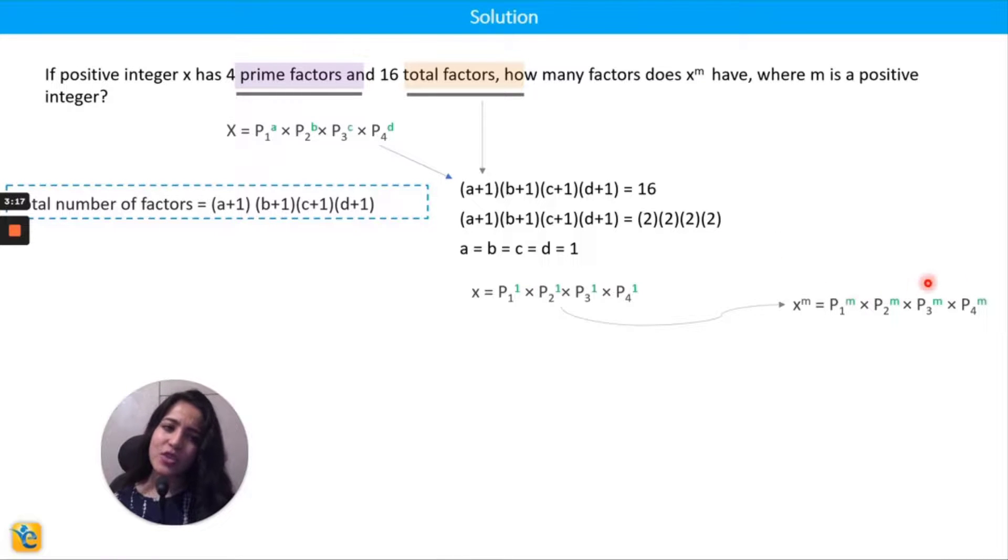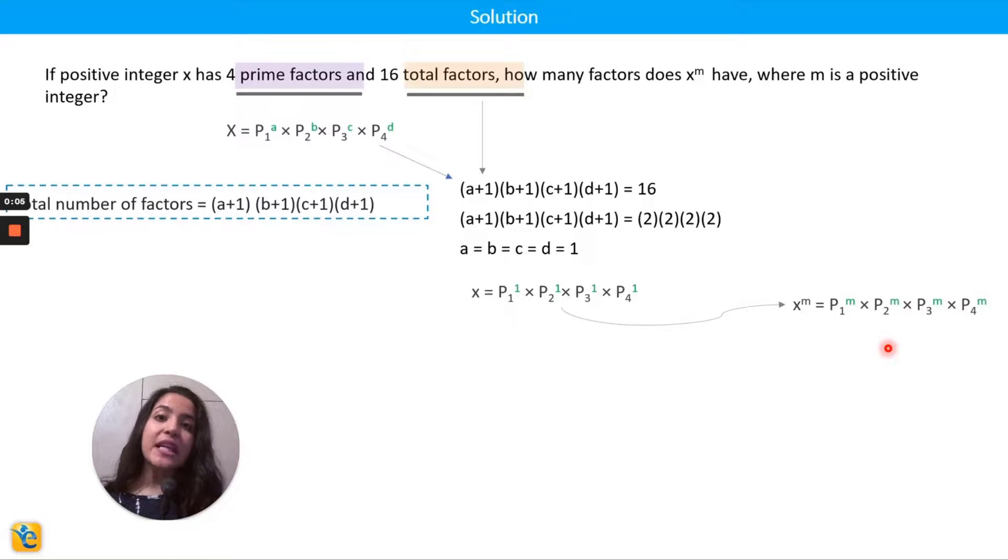Yet again my question was to find the total factors, and I'll again rely on this one result. I know that I have to increase every power by 1 and multiply them. So in my case my powers are m each, so when I increase each of them by 1 they become m+1 each, and then I just have to multiply all the powers.